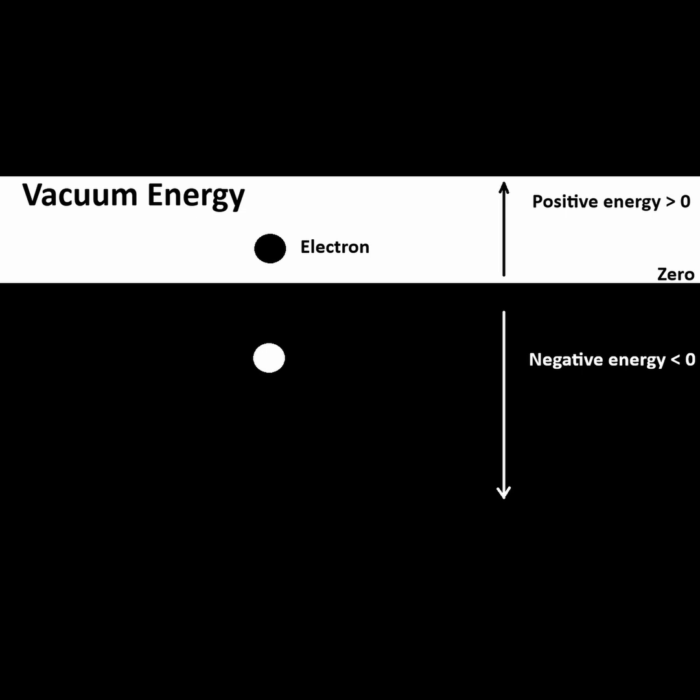Then, the vacuum has lost some energy and there is a hole there. There is an absence of some of that negative energy, with a removed negative charge of the electron particle that was taken out. This hole now will appear like a particle that has positive charge and with all the same attributes of the positron — in other words, antimatter.